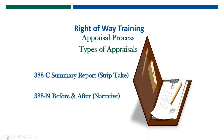We have two types of reports. The first is the 3838C, which is a summary report for a strip take. It basically works the same way as the cost estimate in terms of when to use it. It cannot be used if there is a possibility of consequential damages, and it has to be a very simple acquisition. If there is any question about damages or complexity of the property, then the 3838C summary report cannot be used.